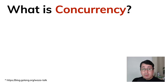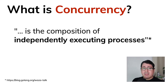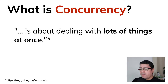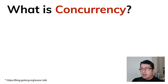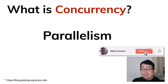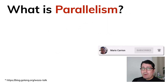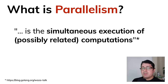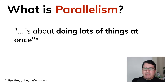Let's start with concurrency. What is concurrency? Concurrency is the composition of independently executing processes. In other words, it's about dealing with lots of items or things at once. Concurrency is usually confused with parallelism — it's not the same. So what is parallelism then? Parallelism is the simultaneous execution of computations, possibly related. It's about doing lots of things at once.